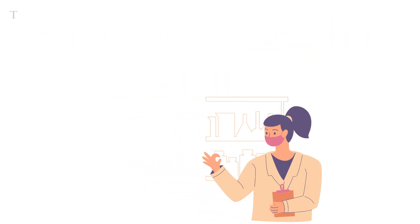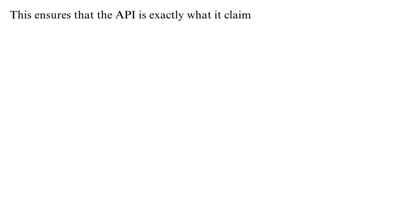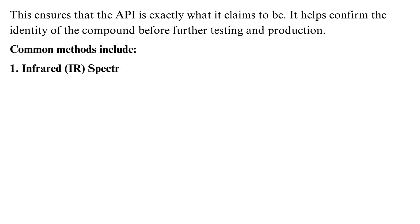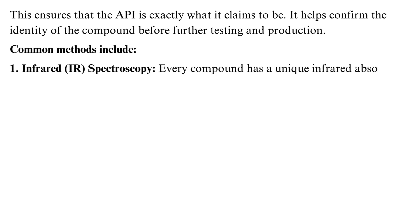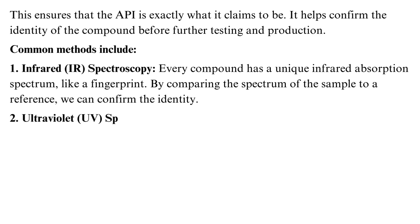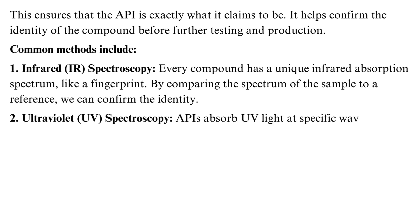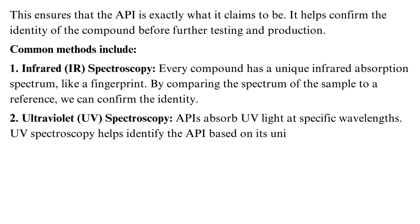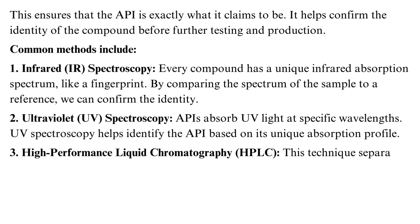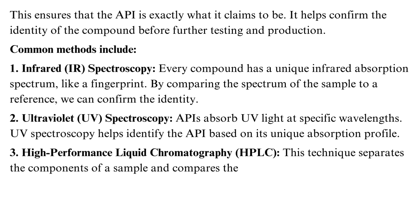Test 3: Identification Tests. This ensures that the API is exactly what it claims to be, confirming the identity of the compound before further testing and production. Common methods include infrared spectroscopy — every compound has a unique infrared absorption spectrum, like a fingerprint; by comparing the spectrum of the sample to a reference, we can confirm the identity. Ultraviolet spectroscopy helps identify the API based on its unique absorption profile. High-performance liquid chromatography separates the components of a sample and compares the retention time of the API to a reference.